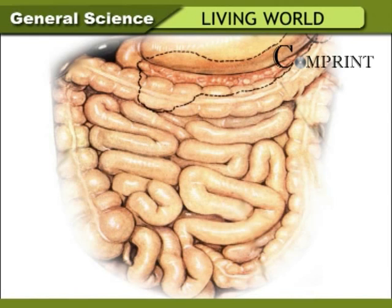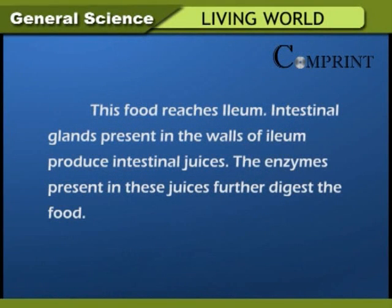The duodenum is U-shaped. The remaining part of the small intestine is called the ileum. Ducts from the liver and pancreas open into the loop of the duodenum. Bile juice is secreted from the liver, and pancreatic juice is secreted from the pancreas. The enzymes in these juices change most of the food into simple form. This food reaches the ileum, where intestinal glands in the walls produce intestinal juices. The enzymes in these juices further digest the food.